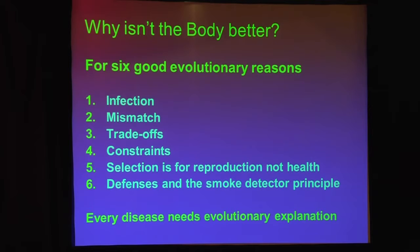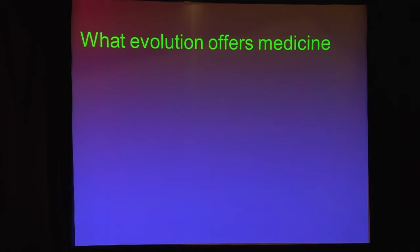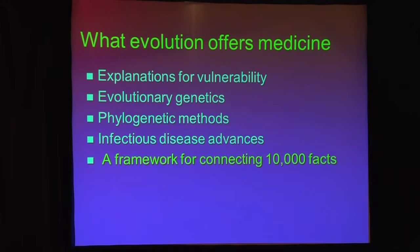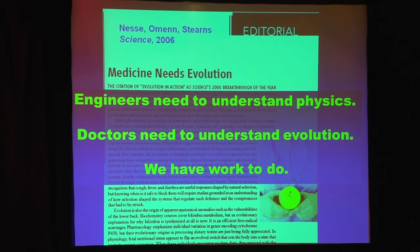So what evolution offers medicine is yet to come for the most part. We do have explanations for vulnerability, evolutionary genetics, phylogenetic methods, infectious disease advances. But most of all, I think it organizes the 10,000 facts we all have to learn into something that's more coherent — instead of just memorizing them all, they begin to make more sense. What if you'd known what bilirubin was for when you memorized those pathways? Wouldn't it just be a whole lot better? And finally, an evolutionary view helps you realize that our bodies are very different from machines — they're shaped by natural selection, better than any machine could be in some ways, and way worse than any machine designed by a 10-year-old in other ways. Bottom line: engineers need to understand physics, doctors need to understand evolution, and we have a lot of work to do to get that to happen. Thanks very much.